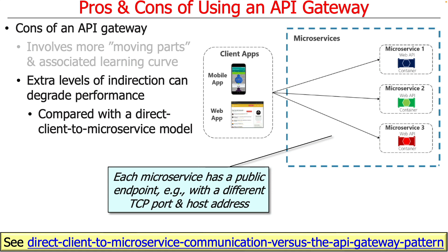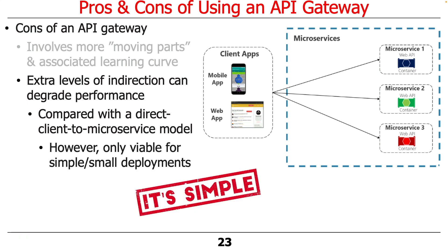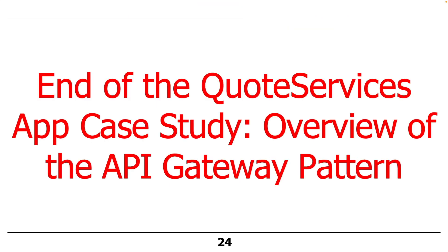The alternative approach would be a direct client-to-microservice model where each client knows all the microservices and contacts them directly. In this case, each microservice has a public endpoint with a different TCP port and possibly a different host address. This approach is doable, but it doesn't really scale and is only viable for very simple or small deployments with just a handful of microservices. You're usually much better off having an API Gateway manage all the coordination, routing, security, load balancing, and failover, rather than trying to manage that yourself. That's the end of the overview of the API Gateway pattern.